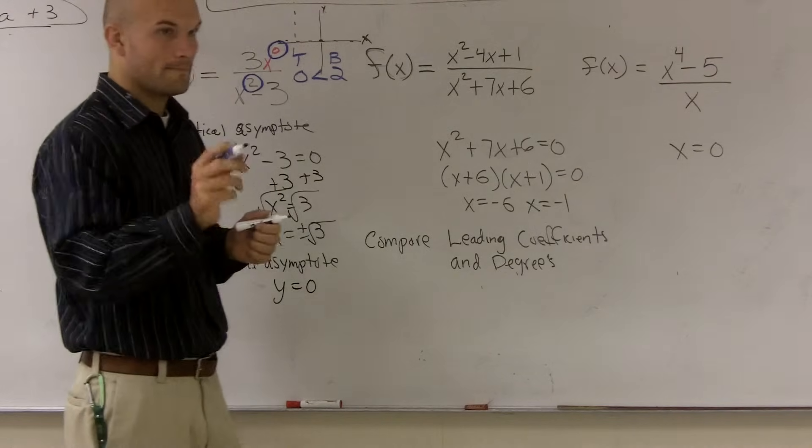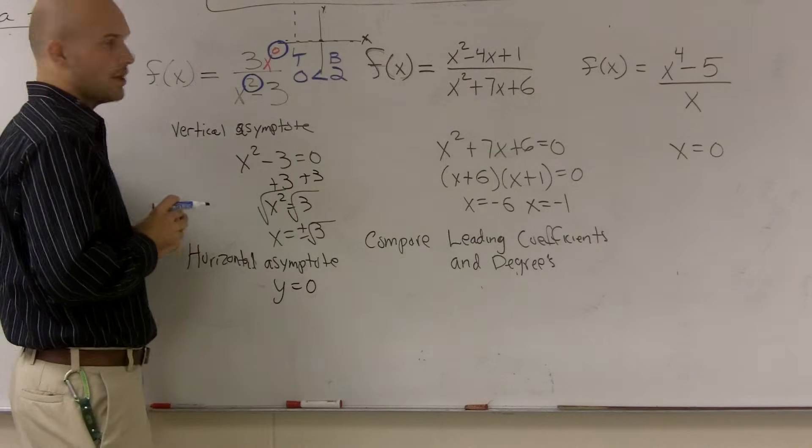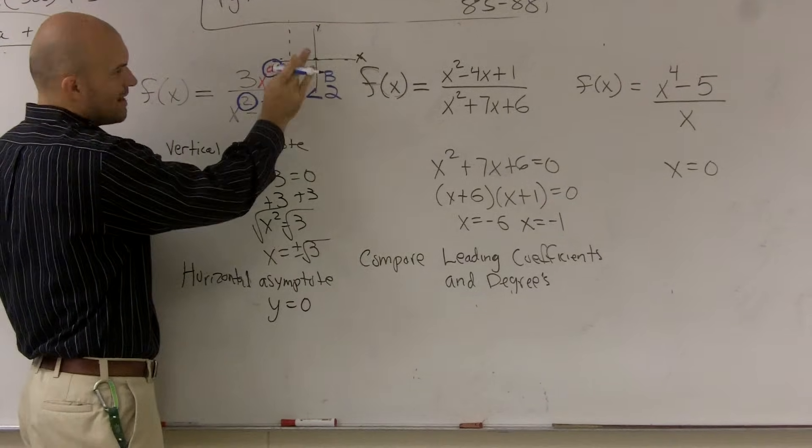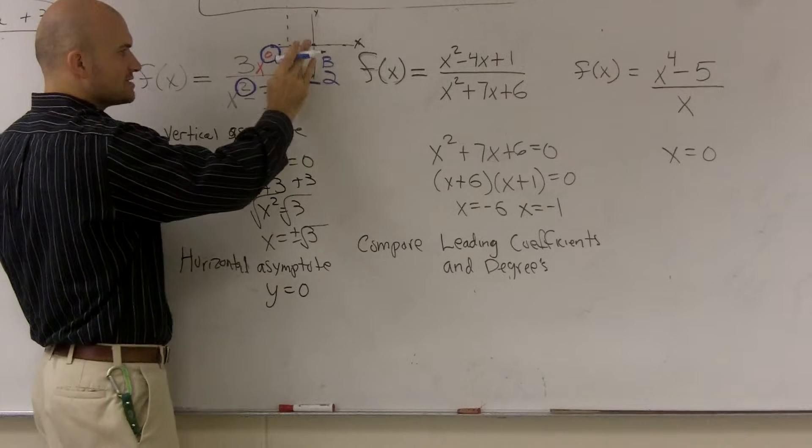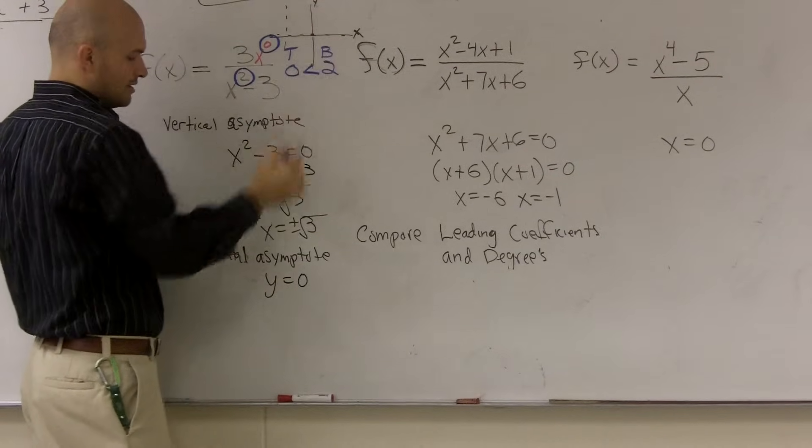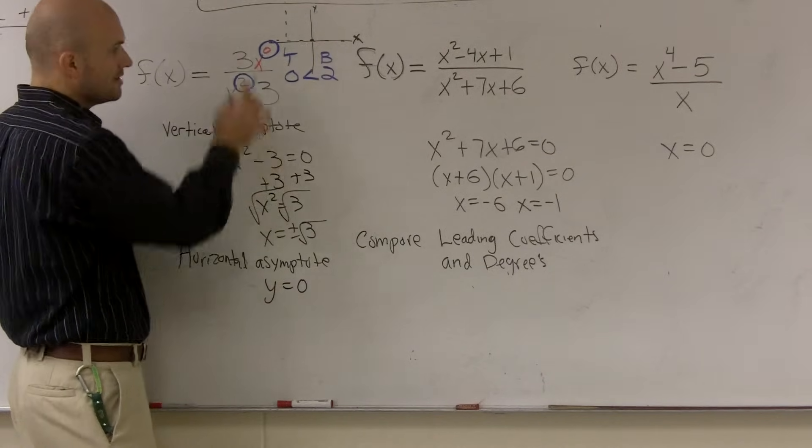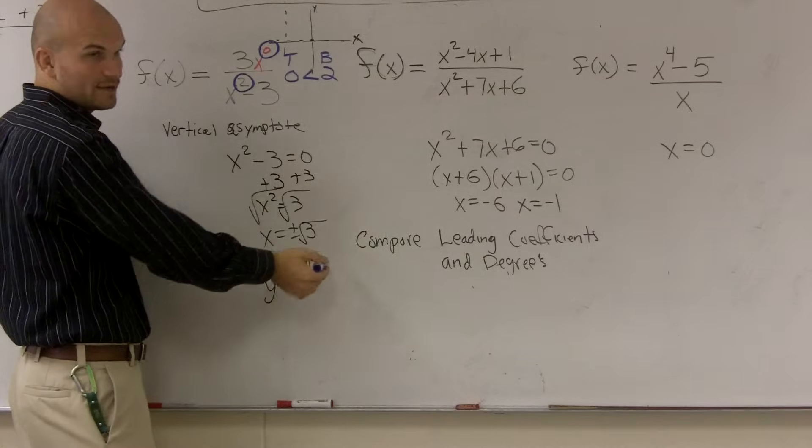Next one. Is that because you divided 0 by 2? No. It doesn't matter if that was 1 and that was 3. Whenever you have a top is smaller than your bottom degree, it's always just y equals 0. Always. So it doesn't matter if it's 5 and 50. If it's less than, y equals 0.